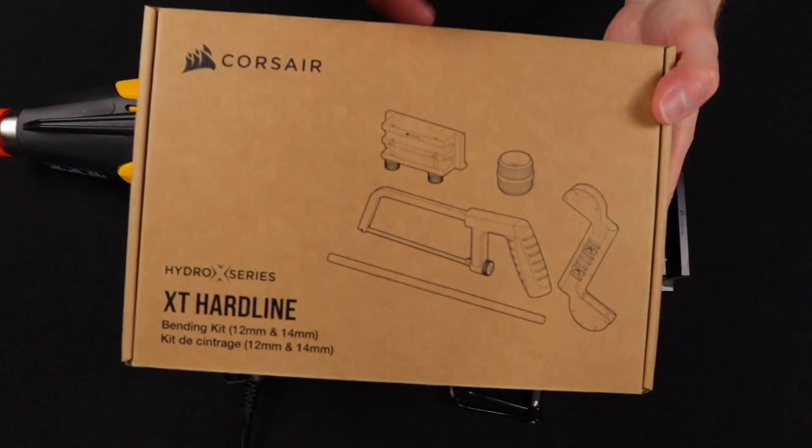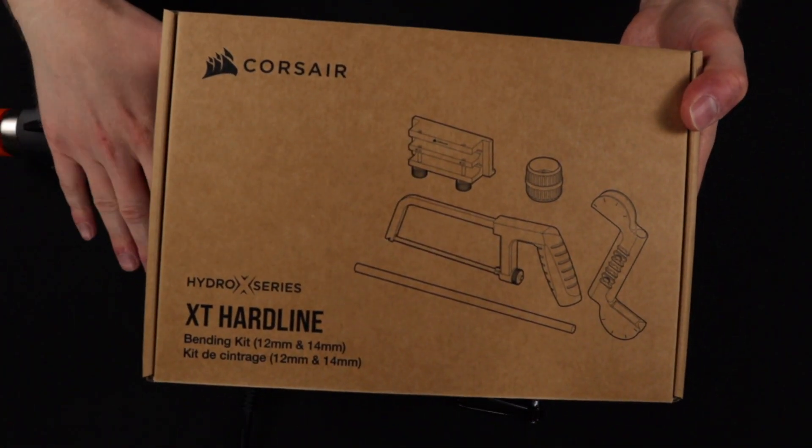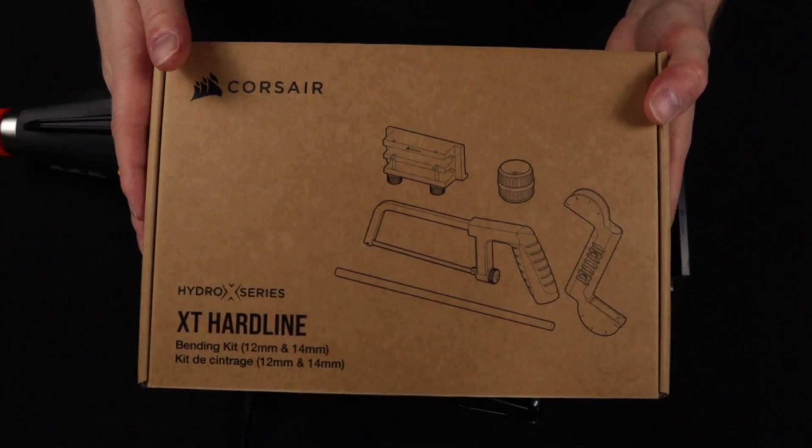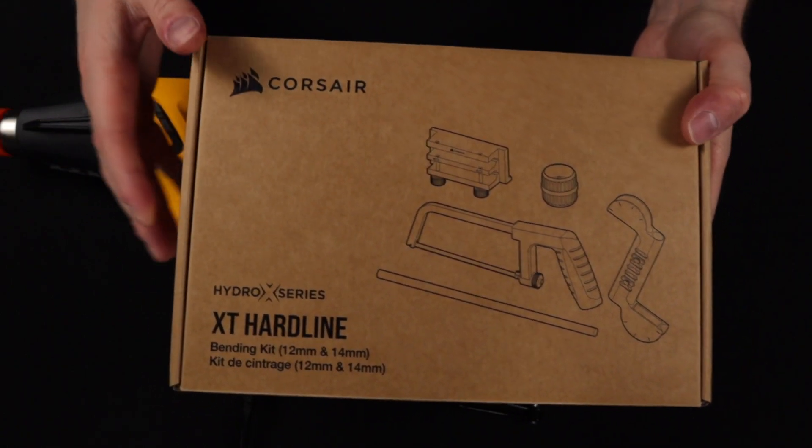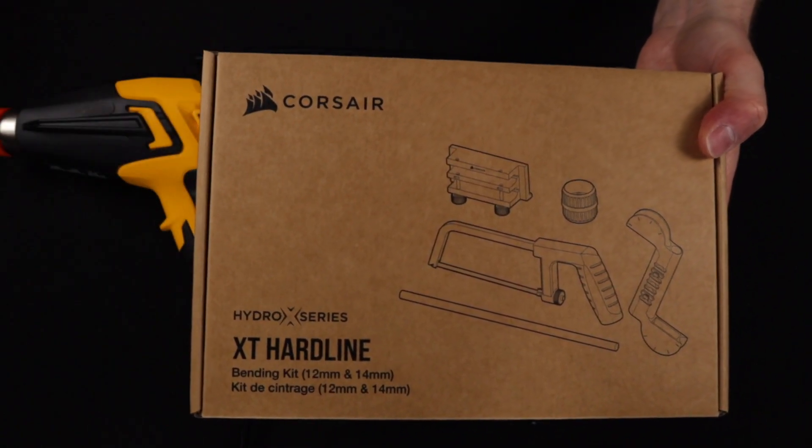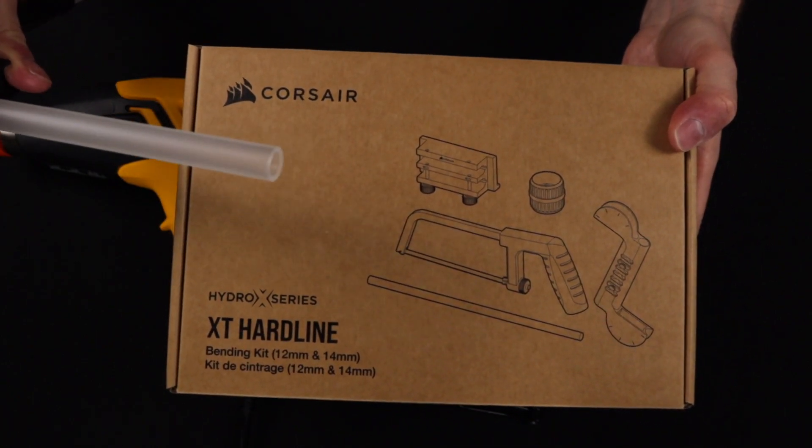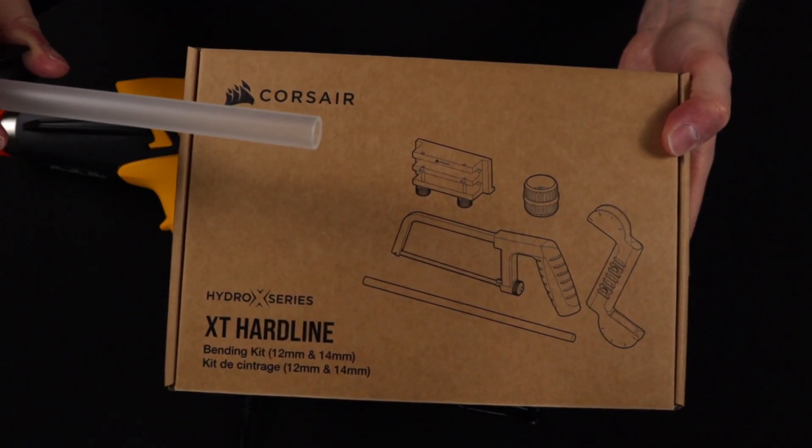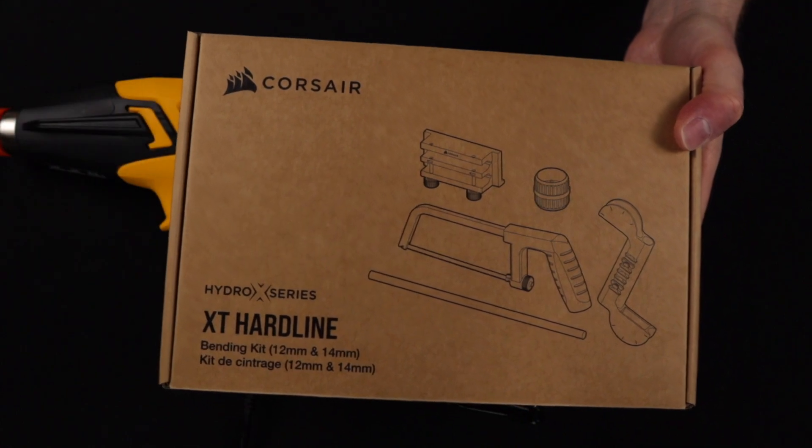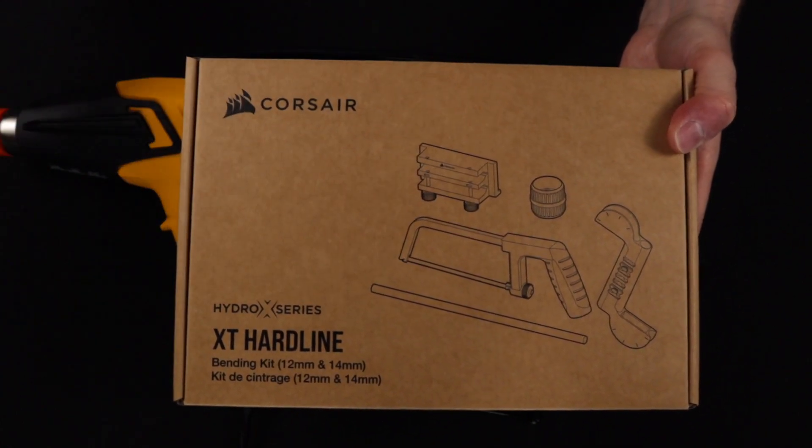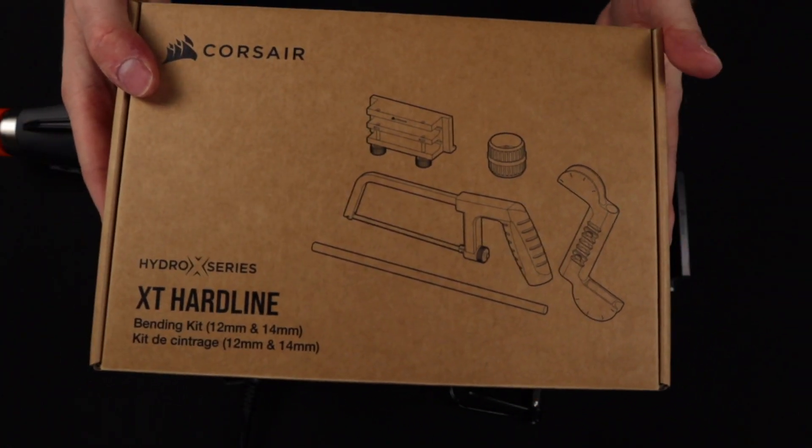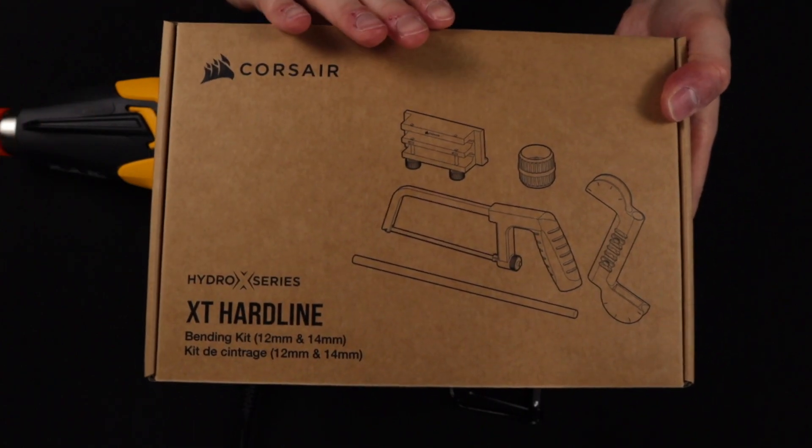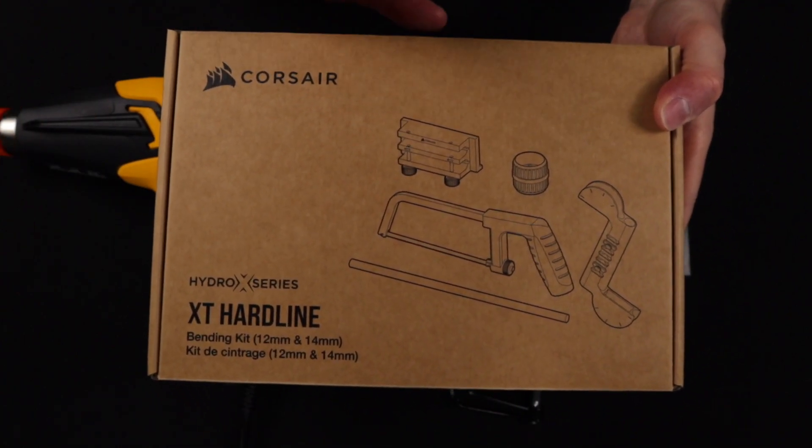You can get all of the tools I just showed you besides the heat gun in Corsair's XT hardline tube bending kit. This is designed to go specifically with their XT hardline tubing that's either 12 or 14 millimeters so it's just a great pairing as their PMMA tubing is really good quality and this kit is a great way to get started in hard tube bending.